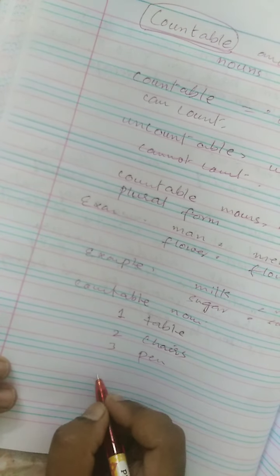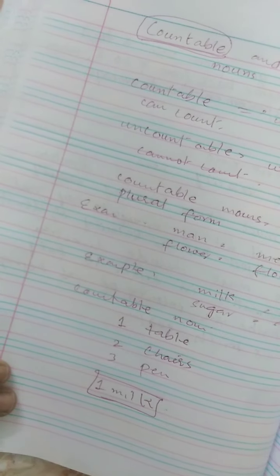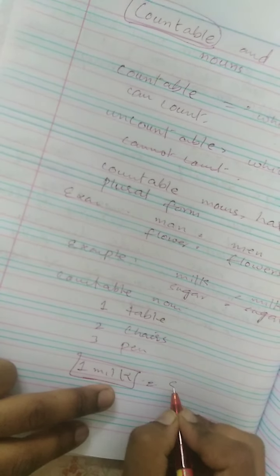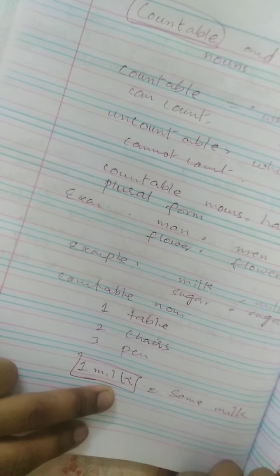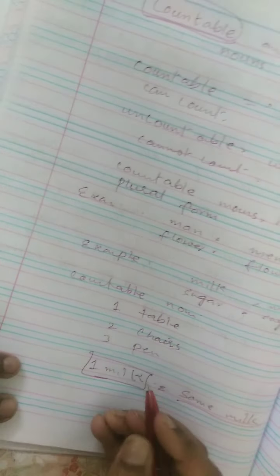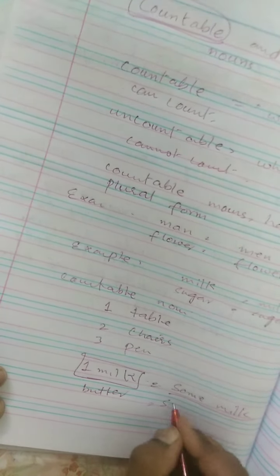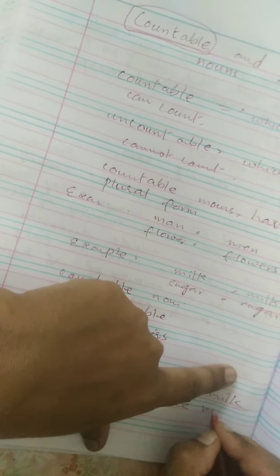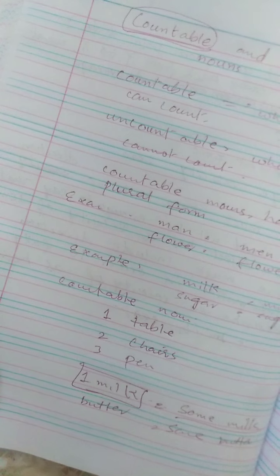Like, one milk, no, hum aise nahin likh saktay. We can write some milk or a glass of milk. Butter ke aagay bhi hum some butter likh lenge. But we cannot write a number before uncountable noun.